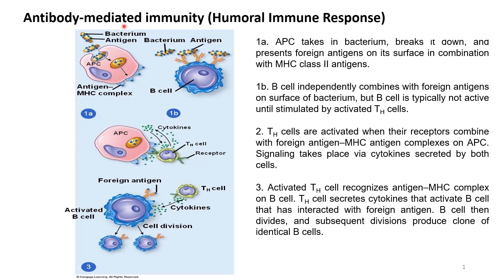Look at this figure. It shows an APC — for example, a macrophage. It ingests this bacterium. The antigen on the surface of this bacterium will be broken down into antigen fragments. The antigen fragment will bind to the class 2 MHC of this APC, forming an antigen-MHC complex. The antigen-MHC complex will be presented on the surface of this APC via antigen presentation.